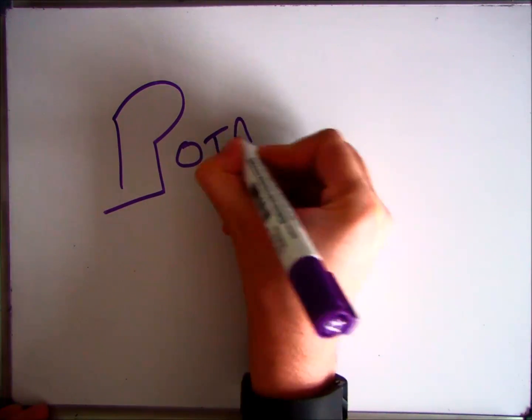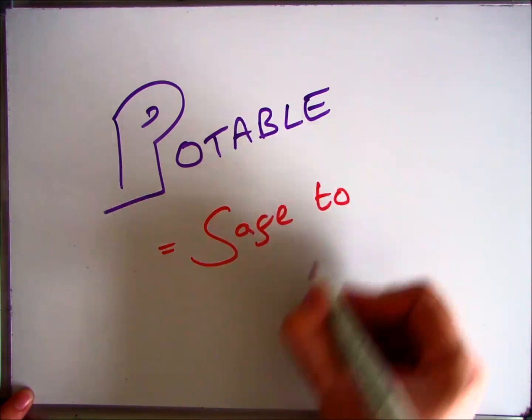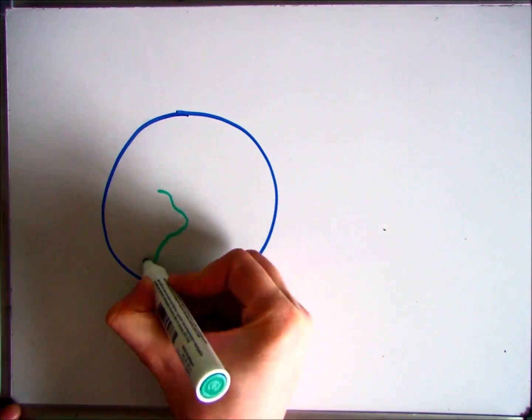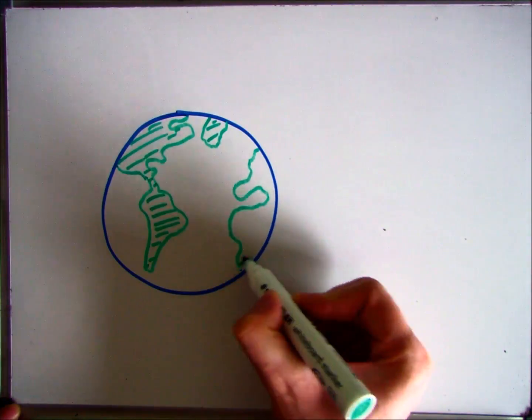This lesson introduces a new keyword, which is the word potable. Key definition there: potable means safe to drink. If we were to have a look at the earth surface, it's quite clear to see that the majority of it is water, 72% in fact.